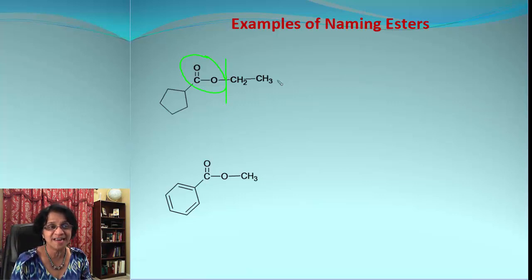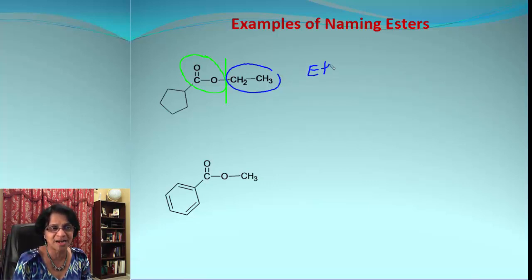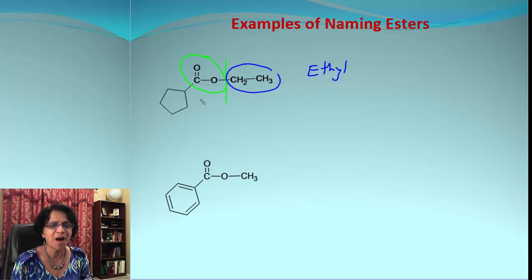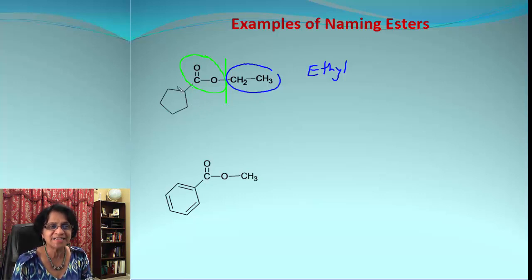The name of the alkyl group is ethyl again — two carbon atom chain. What about the cyclic chain? If you look carefully, that is a cyclopentane ring.